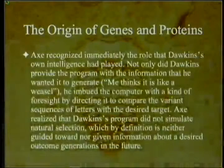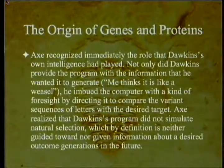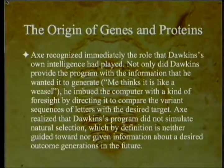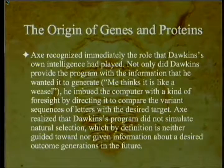Axe recognized immediately the role Dawkins' own intelligence had played. Not only did Dawkins provide the program with the target he wanted it to generate — which he insists life does not have — but he imbued the computer with a kind of foresight by directing it to compare variant sequences with the desired target. Axe realized that Dawkins' program did not simulate natural selection, which by definition is neither guided towards nor given information about a desired outcome generations in the future.